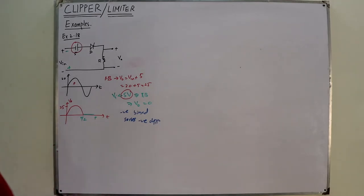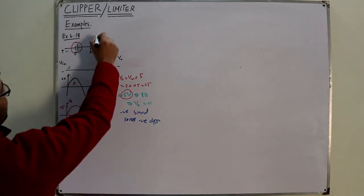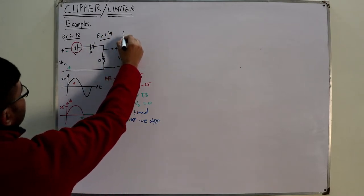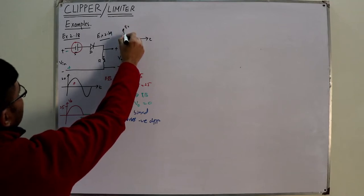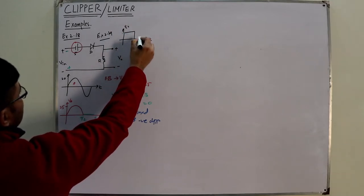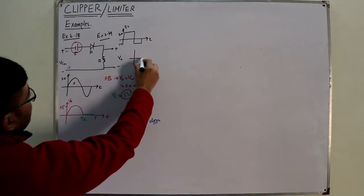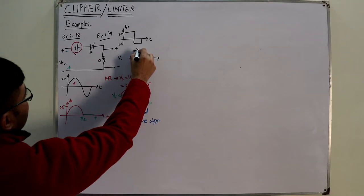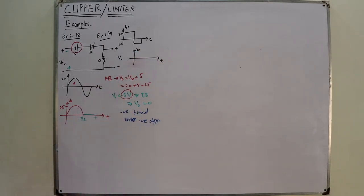For the next example, 2.19, you have the same circuit and the same calculations, but the only difference is that the input voltage is changed to a square wave — let's say this sort of wave, with values of 20 and 10. We already solved it in the previous video, so you can draw the output for yourself. Next is example 2.20.